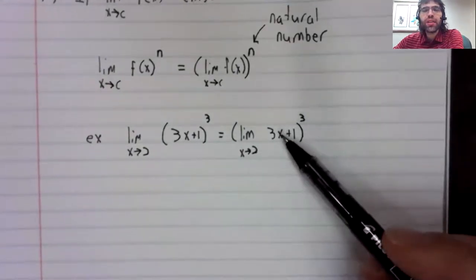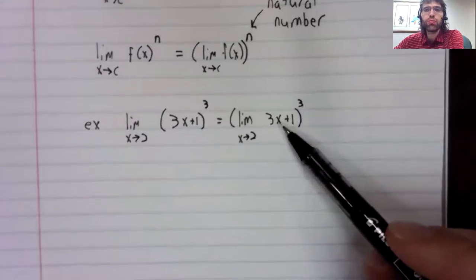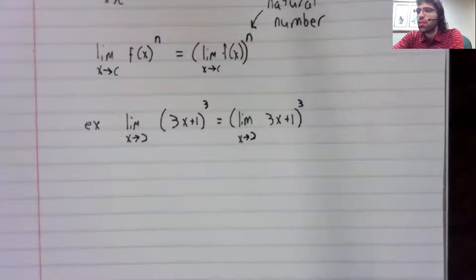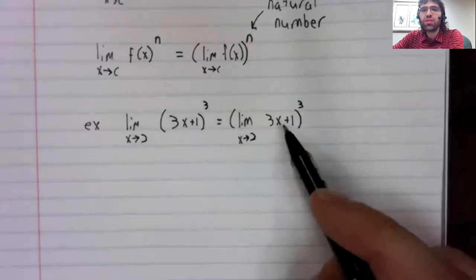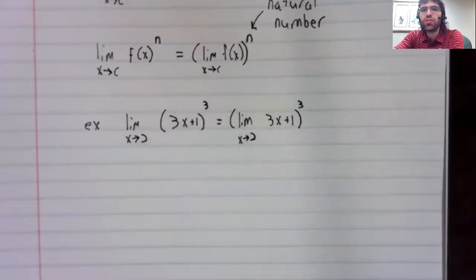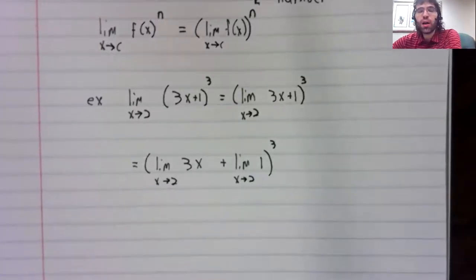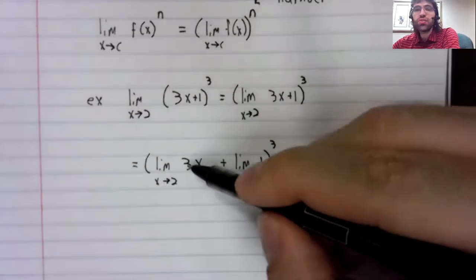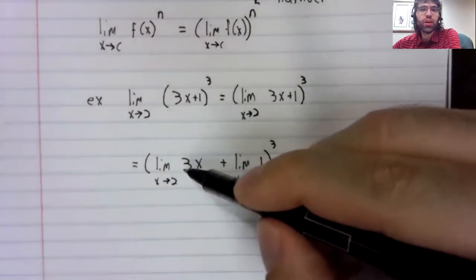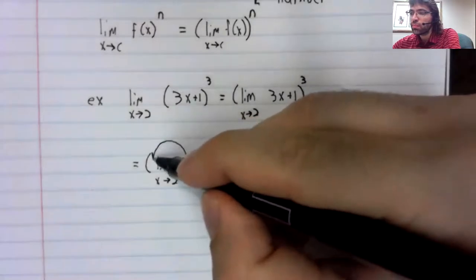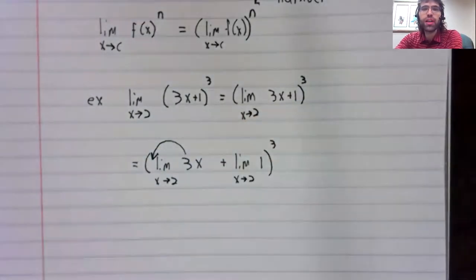And this limit we can take using rules we've already learned. The limit of a sum is the sum of the limits. So we can break this limit apart. This three is a constant multiple. It can be pulled out.